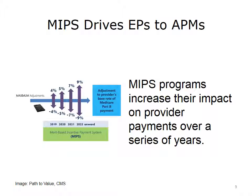With MIPS, eligible clinicians, either as individuals or a group, receive a MIPS composite performance score based on four factors. These factors include quality, resource use, clinical practice improvement activities, and advancing care information. Advancing care information focuses on health information exchange, e-prescribing, electronic patient engagement, and other health IT-focused activities.